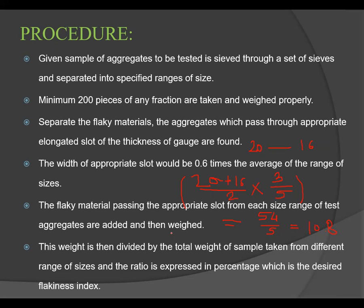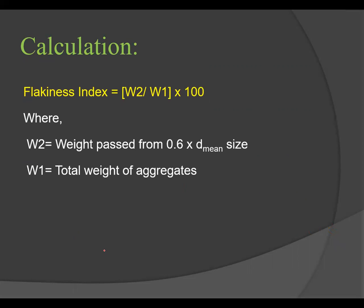The flaky material passing the appropriate slot from each size range of the test aggregate are collected and weighed together. This total weight is recorded as W2. This weight W2 is then divided by the total weight of the sample taken from all different size ranges, and the ratio is expressed as a percentage, which gives the Flakiness Index.